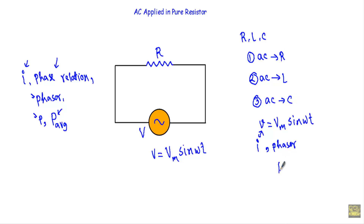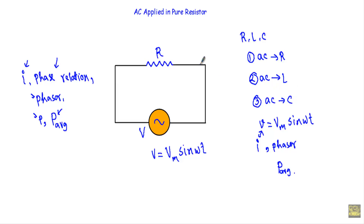That means the average power P average. This is the first video. In my consecutive videos, I will show you all these quantities in a pure resistor, inductor, and capacitor circuit, in an RLC series circuit, and an RLC parallel circuit. Now let me proceed with this circuit and find all these quantities.